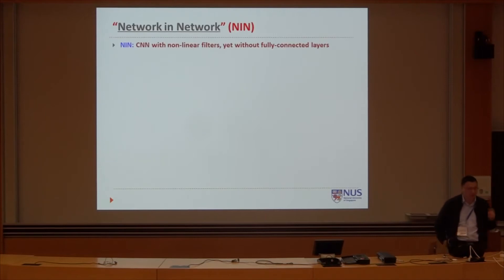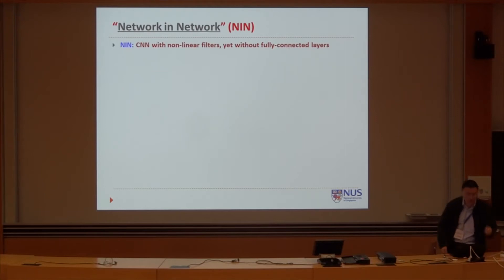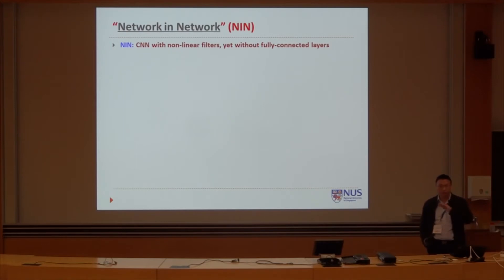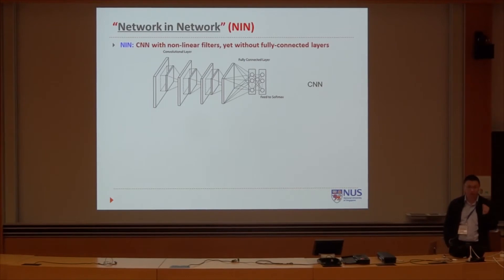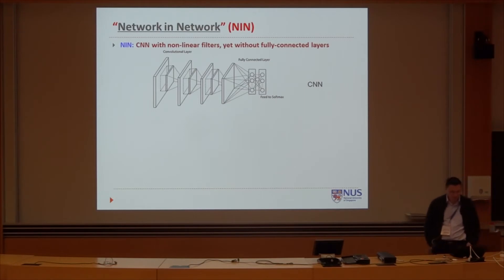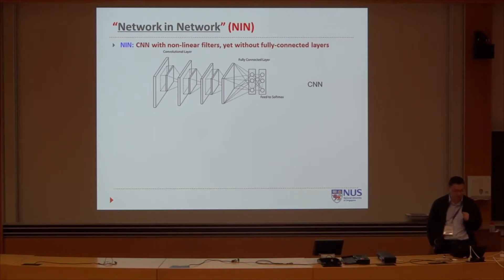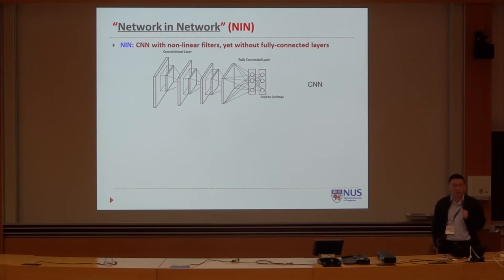Last year, we introduced the Network in Network. The Network in Network actually is a particular thing with nonlinear filters without the fully connected layer. This is based on observations on CNNs — that they only use single linear convolution and also use a fully connected layer to achieve nonlinear classification. But the single layer sometimes is not strong enough to understand the local properties.